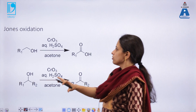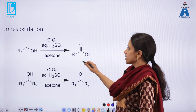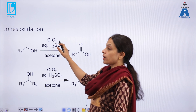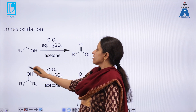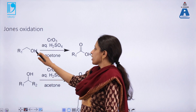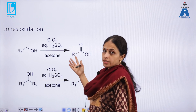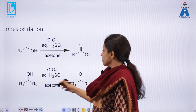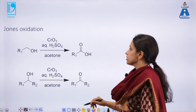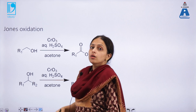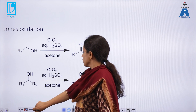Another example of oxidation is the oxidation of alcohols to carboxylic acids directly using chromium trioxide in the presence of aqueous sulfuric acid and acetone as the solvent. Here a primary aliphatic alcohol is converted into carboxylic acid directly. Similarly, secondary alcohol can be converted into a ketone by this process. This is known as Jones oxidation, an important method to convert alcohols into the corresponding carbonyl compounds.